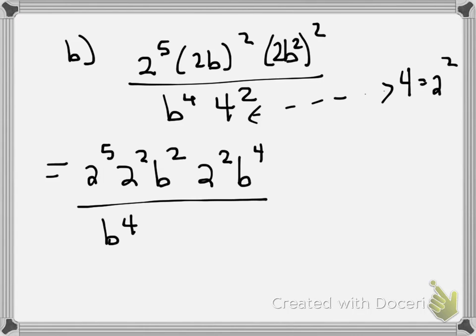Now, I know that 4 is the same as 2 squared, so really, this number right here is 2 squared squared, so I have 2 to the 4th.